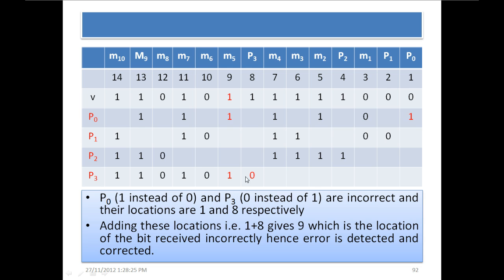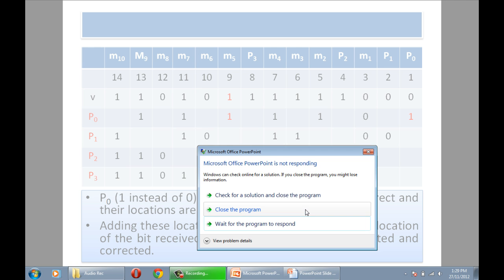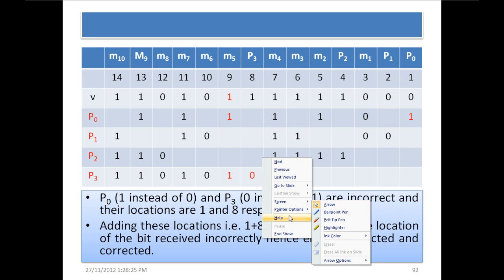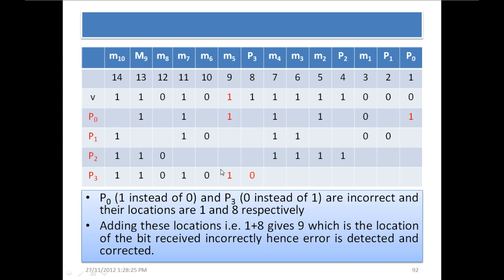And when we look at this parity bit number 3, this is again calculated, decoded incorrectly as 0 instead of 1.